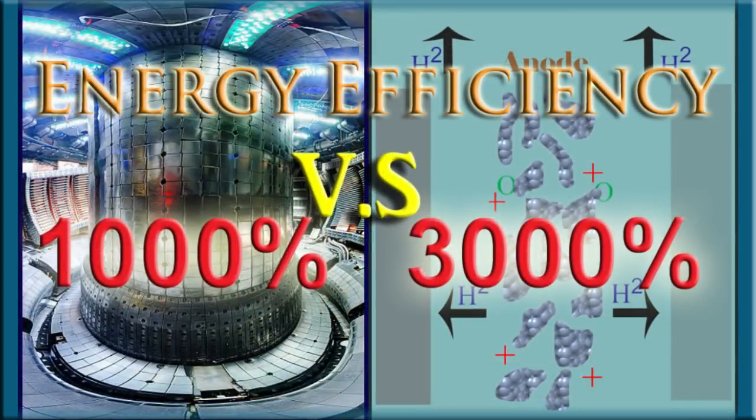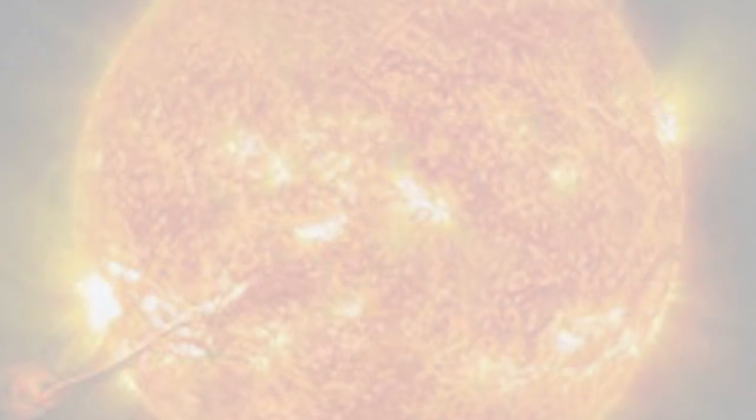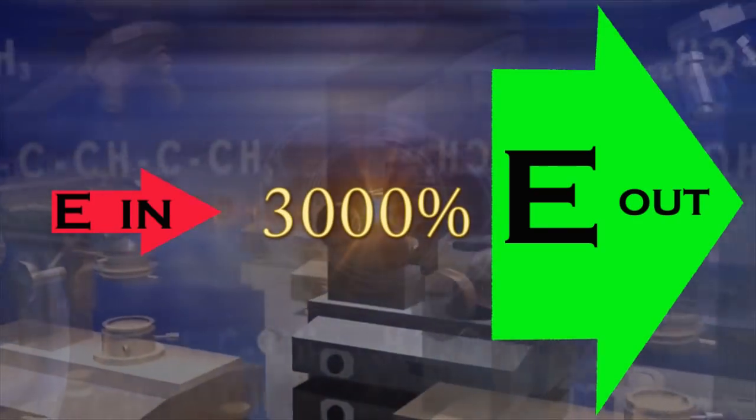especially when compared to the scale and complexity of the nuclear fusion project that requires a reactor temperature much hotter than that of the sun. The H2IL enhanced electrolysis system is stable with a boost factor of up to 30 or 3000%.